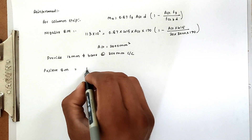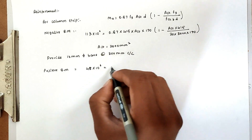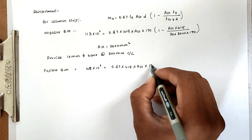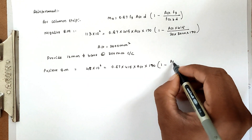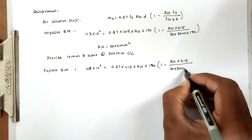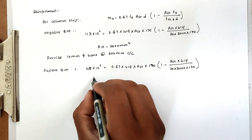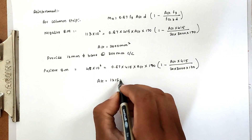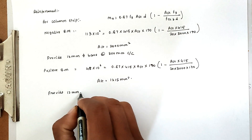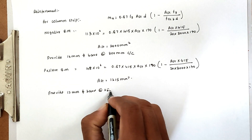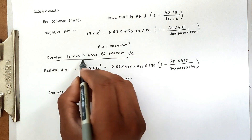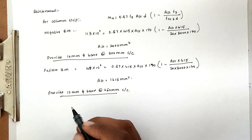For the positive bending moment in the column strip: substituting MU = 48 into 10^6, Fy = 415, d = 170 mm, Fck = 20, b = 3000: we get AST equals 1215 mm². Provide 12 mm diameter bars at 250 mm center-to-center spacing.